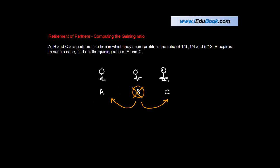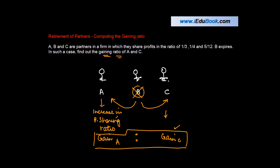Whatever is the amount of increase in profit sharing ratio is known as the gain of A. Similarly, whatever is the increase for B will be known as gain for C. What you mean by gaining ratio is the ratio of these two gains which are made by the two partners.